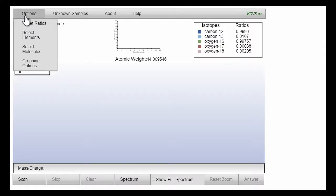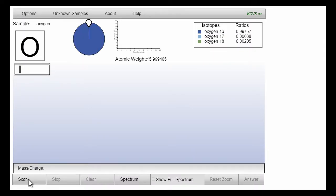This mass spectrometry simulator shows how laboratory measurements are made to determine the number of isotopes and their relative abundance. Users can choose from a list of elements and molecules and can alter the isotope ratio of an element to see how that affects the mass spectrum.